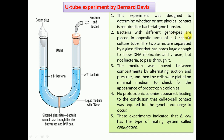Bacteria with different genotypes are placed in opposite arms of a U-shaped culture tube. The two arms are separated by a glass filter that has pores large enough to allow DNA molecules and viruses, but not the bacteria, to pass through. This means it does not allow physical contact between the two different bacterial strains. The medium was moved between the compartments by alternating suction and pressure, and the cells were then plated on minimal medium to check for the appearance of prototrophic colonies. No prototrophic colonies appeared, leading to the conclusion that cell-to-cell contact is required for genetic exchange to occur.